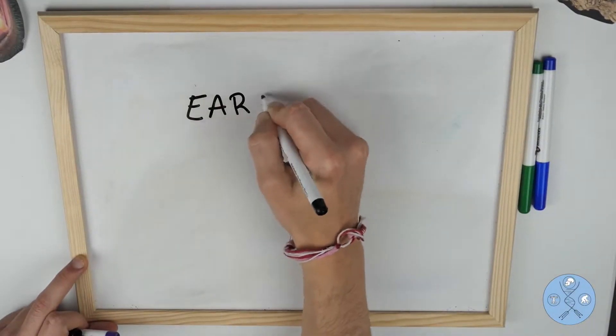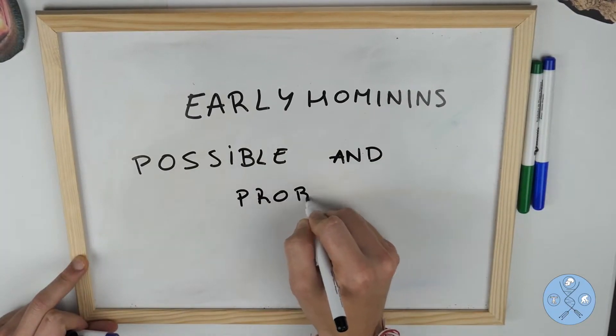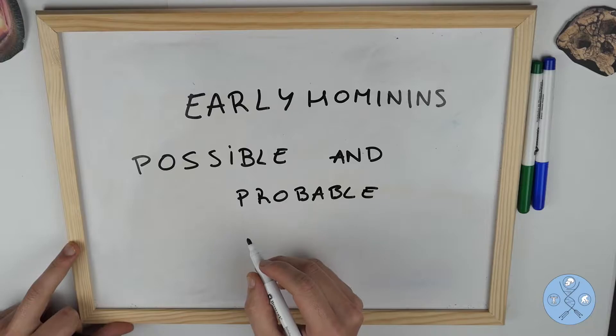Hi everyone, welcome to our first video in which we are going to talk about the first hominins, which appeared between 8 and 5 million years ago.